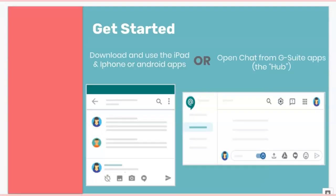Getting started, you have a few options. You can either use the Google Chat that is part of the G Suite apps, as found in our hub where all of our other G Suite applications live, or you can use the iPad, iPhone, or Android apps on a mobile device. If you are using it on a mobile device you'll need to download the appropriate chat app, and if you're using it on a computer you would go to your Google applications just as you would your email or any other Google application.